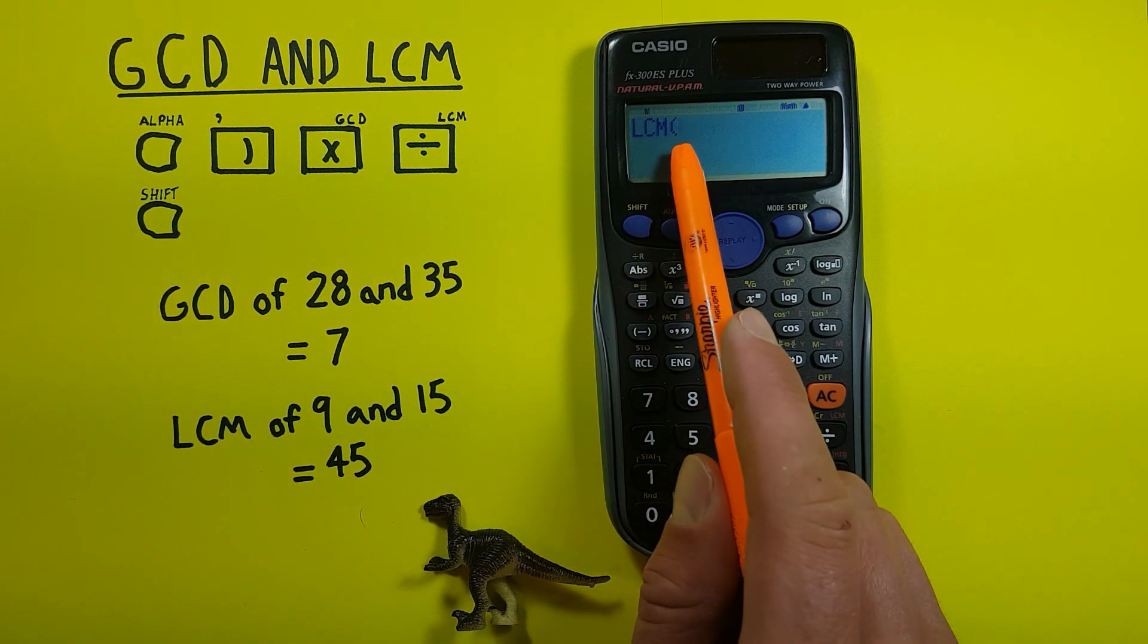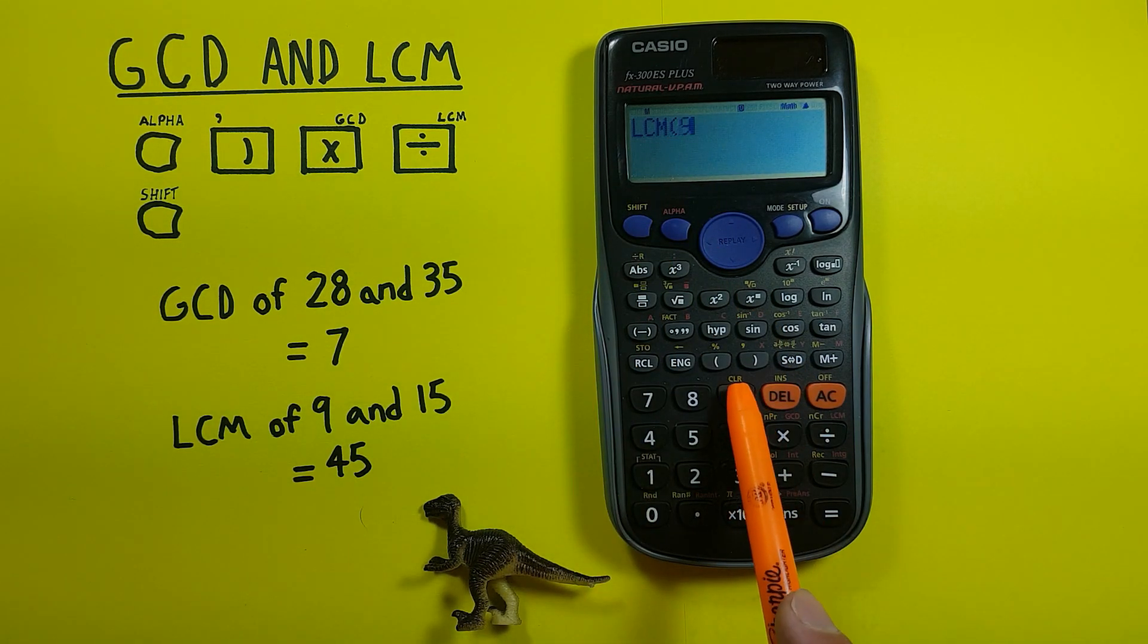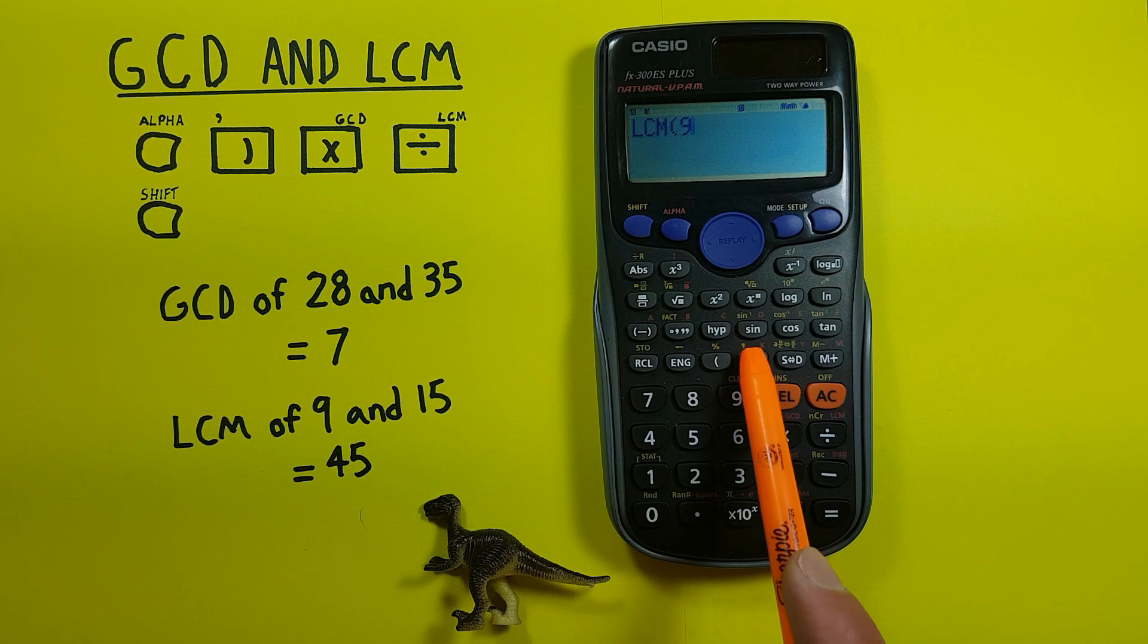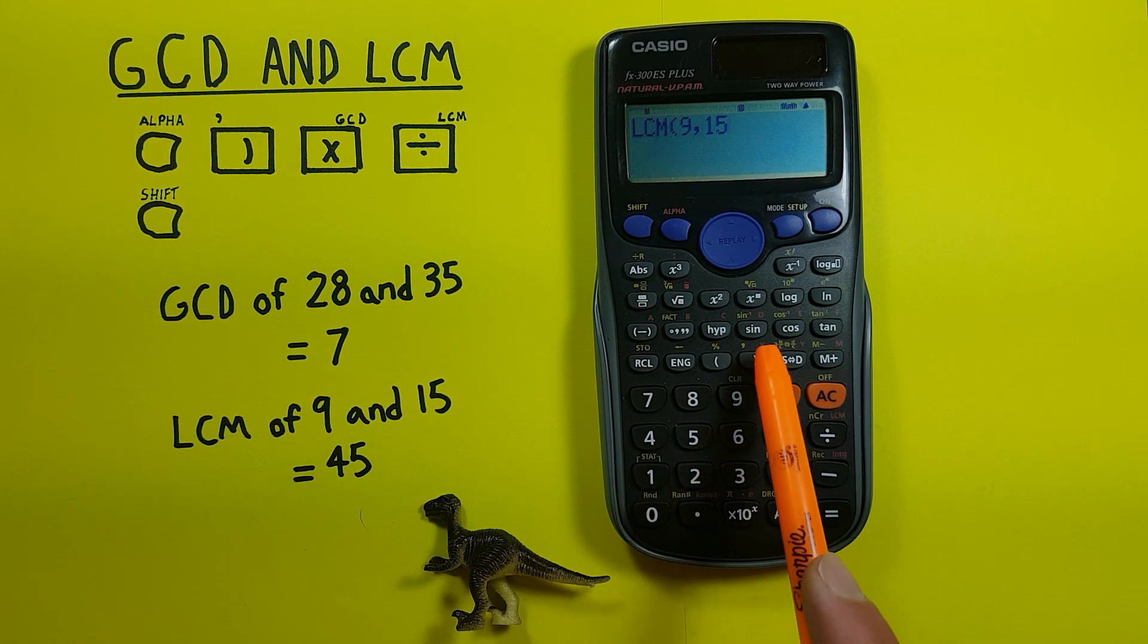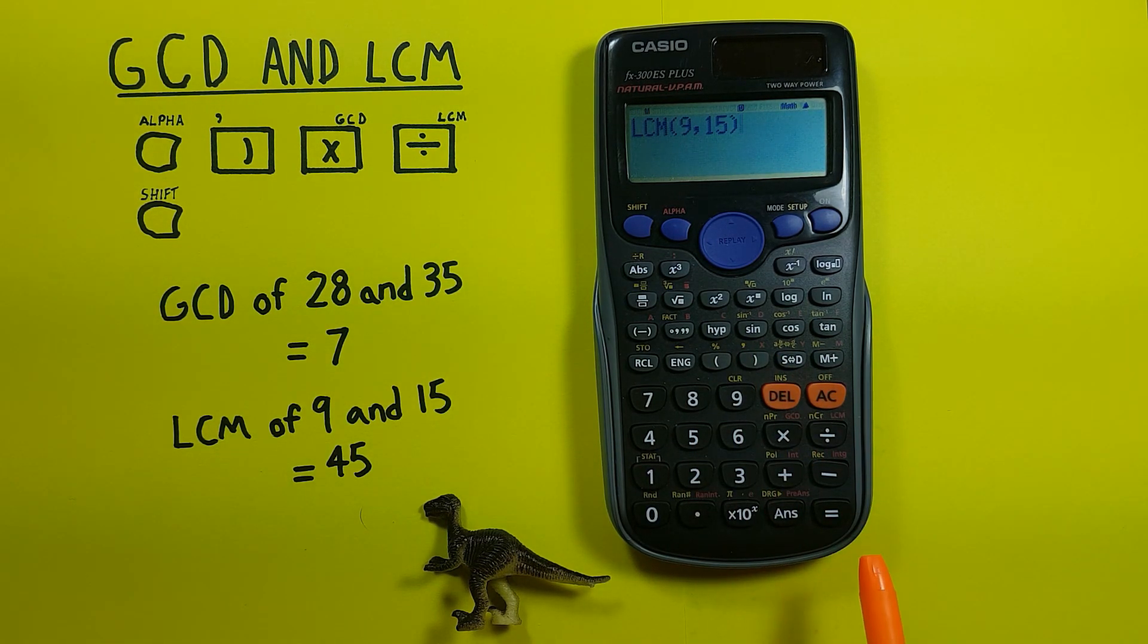There we go, LCM and then enter our numbers 9 and shift comma 15. Close our bracket and press equals and you can see we get a result of 45 which makes sense because both 9 and 15 go into 45.